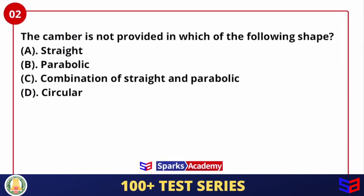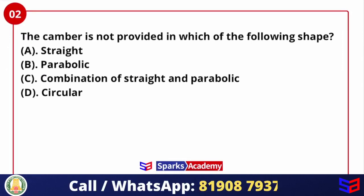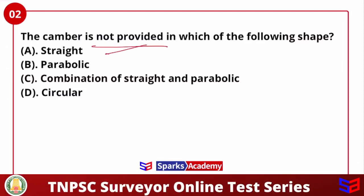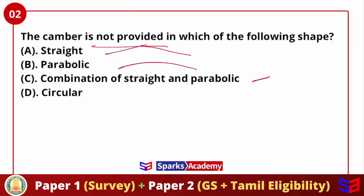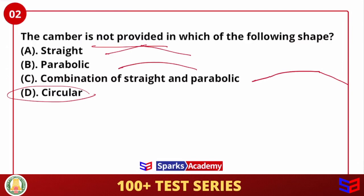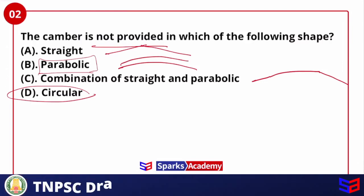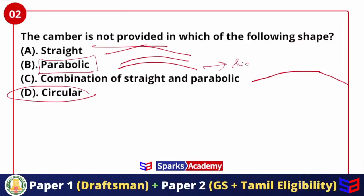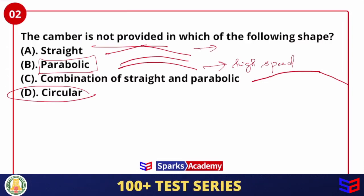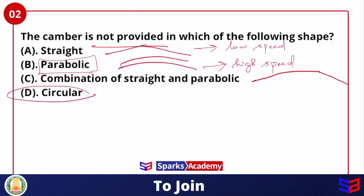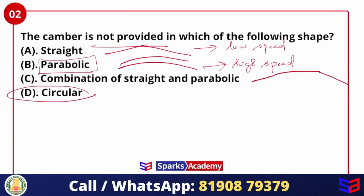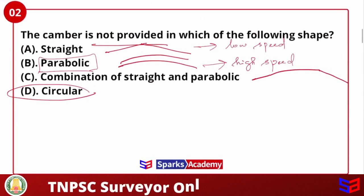Next question: camber is not provided in which of the following shapes? We already know the shapes: straight line camber, parabolic camber, and combination of straight and parabolic camber. Parabolic camber is preferable for high-speed vehicles; straight camber is preferable for low-speed vehicles. Circular camber is not a standard shape provided. So the answer is circular.